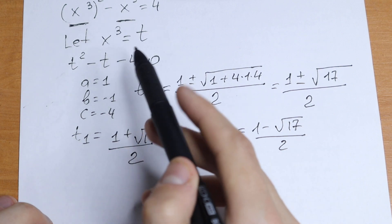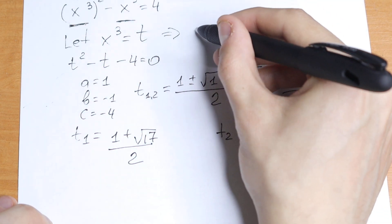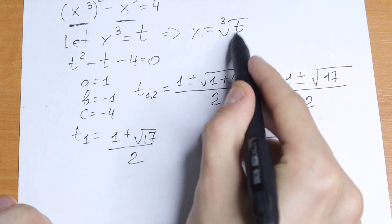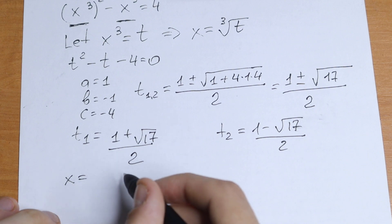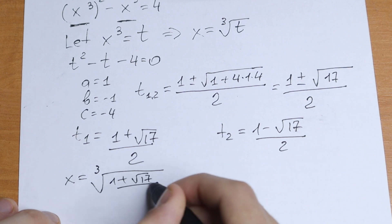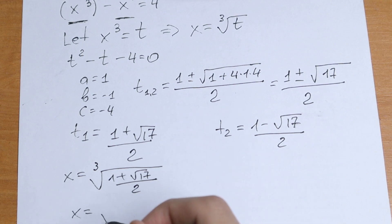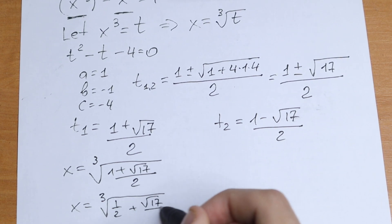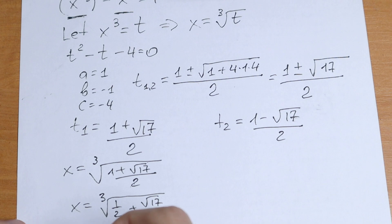We need to solve for x. Since x cubed equals t, if we take the cube root we get x equals the cube root of t. For the first root, taking the cube root of t₁ gives us x equals the cube root of 1 plus square root of 17 over 2, which we can simplify by dividing both terms by 2: x equals the cube root of one half plus square root of 17 over 2. This is our first root.